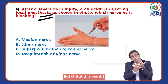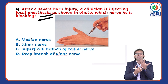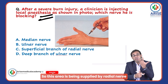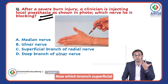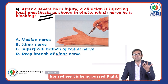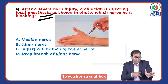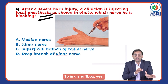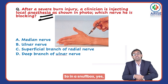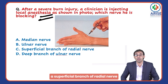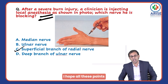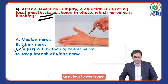But still, the patient is having pain in this area, which is supplied by the superficial branch of the radial nerve. From where does it pass? From the anatomical snuff box — please give the injection in the snuff box. In the snuff box, you can identify the superficial branch of the radial nerve. The answer is C. I hope all these points are clear to everyone.